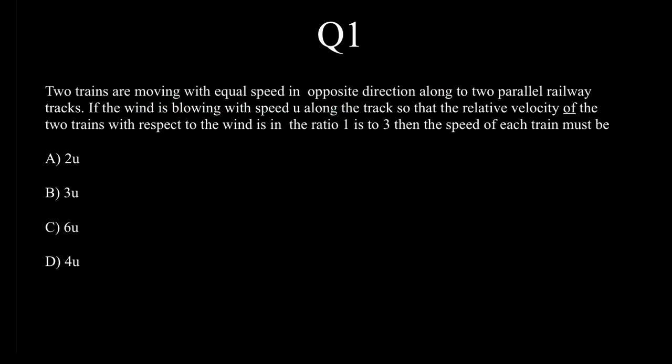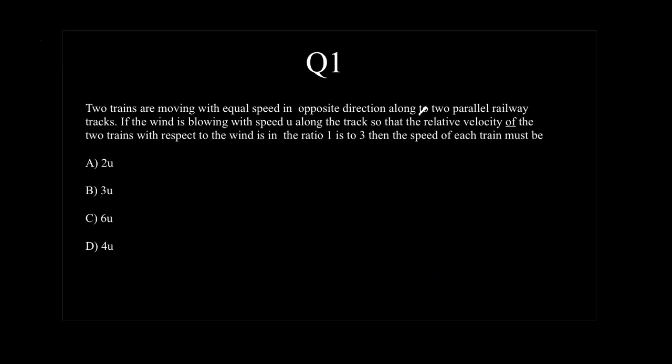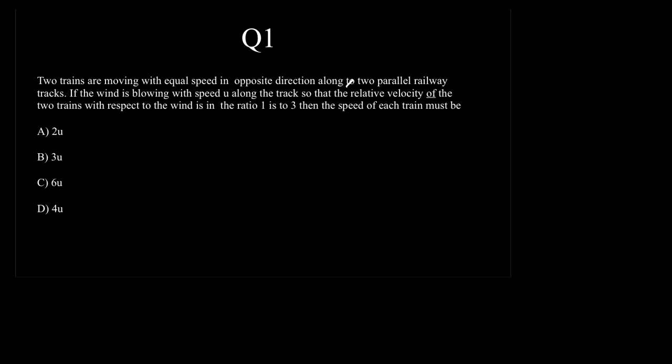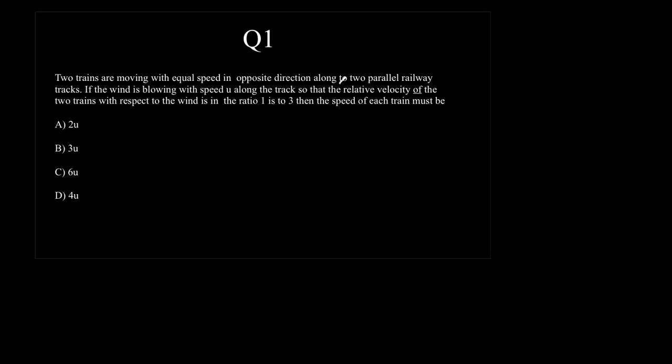Two trains are moving with equal speed in opposite directions along two parallel tracks. If the wind is blowing with speed u along the track so that the relative velocity of the two trains with respect to the wind is in the ratio 1:3, then the speed of each train must be. In this series, I will explain the complete logic behind each question, not just solve the MCQ, but elaborate the steps and understand the concept — how formulas are derived and used, rather than directly applying them.